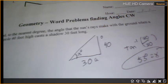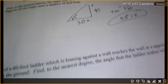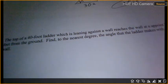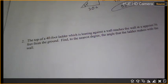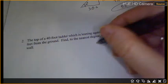Okay. I want you guys to try to set up the picture for this one. Let me zoom out just slightly. Okay. The top of a 40 foot ladder, which is leaning against the wall, reaches the wall at a point of 36 feet from the ground. Find to the nearest degree the angle the ladder makes with the wall. Remember, you should always have a right triangle.